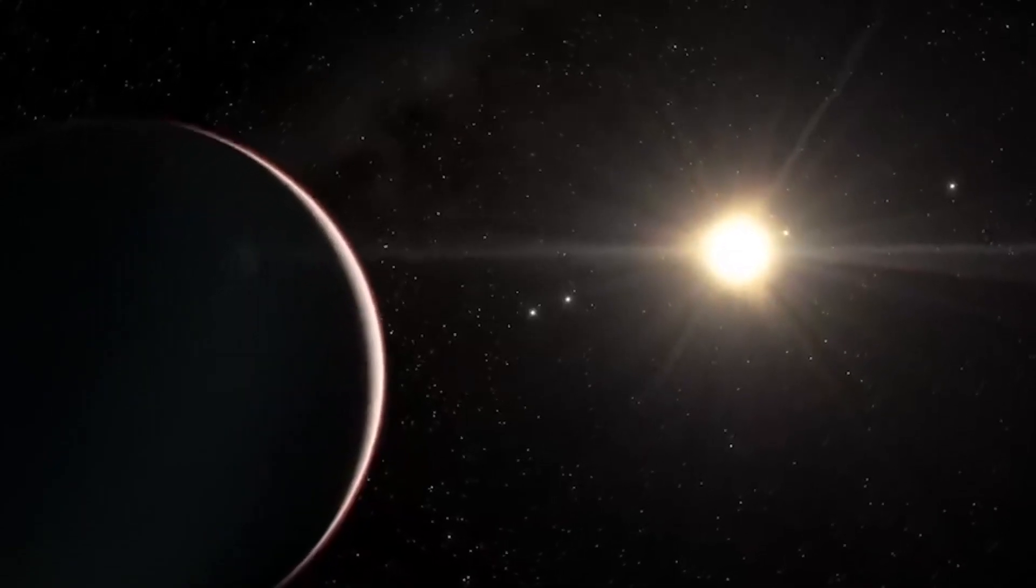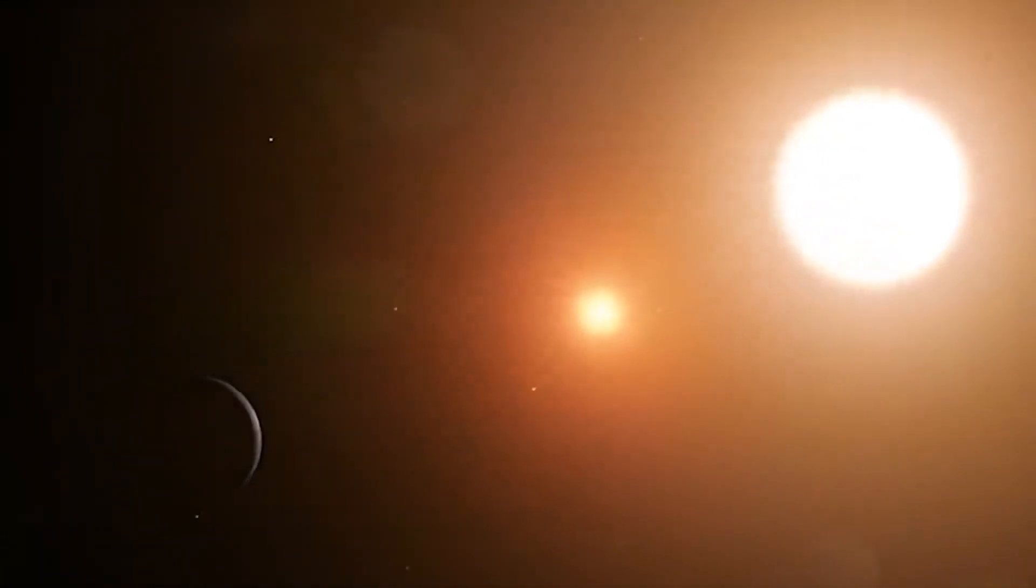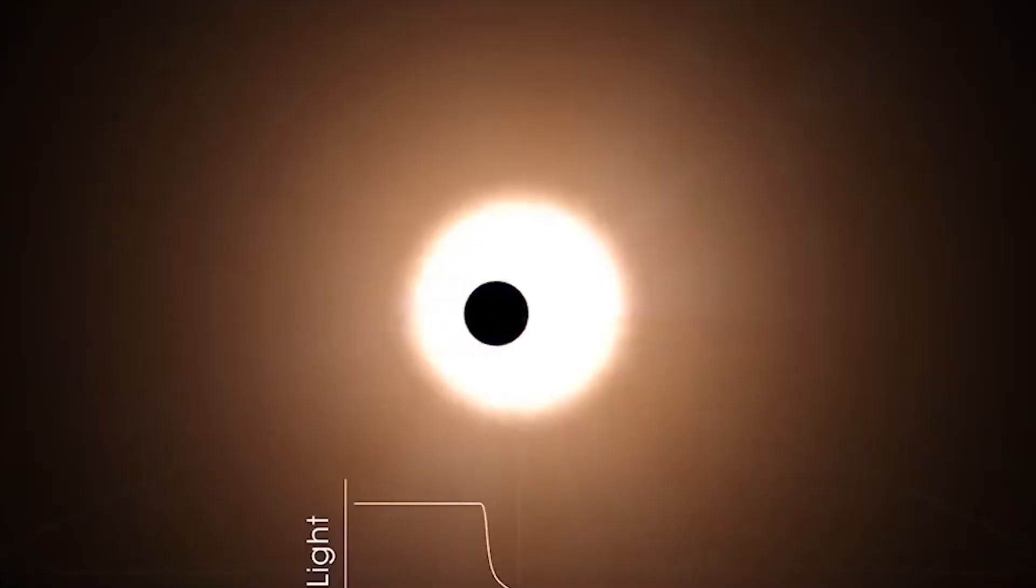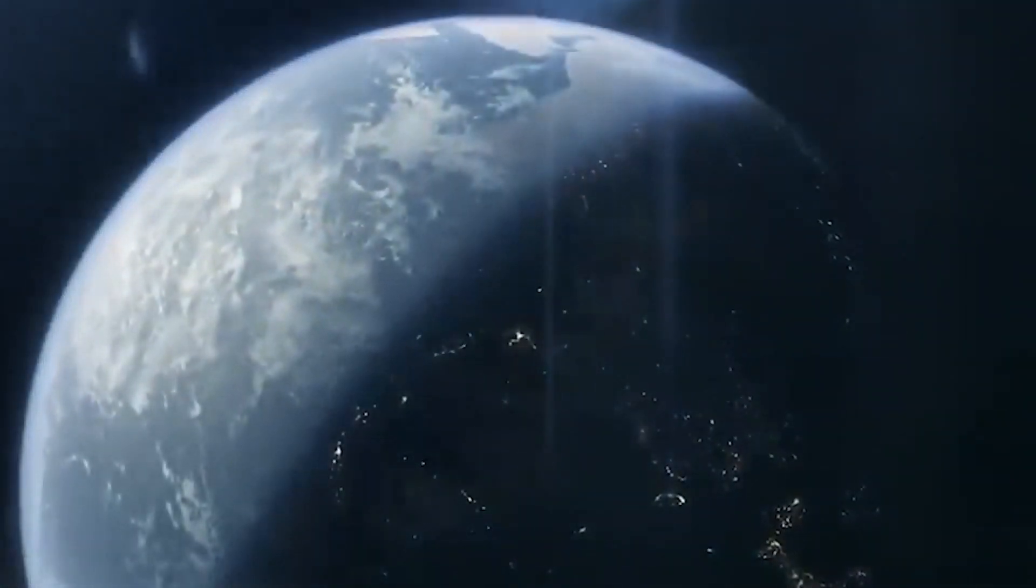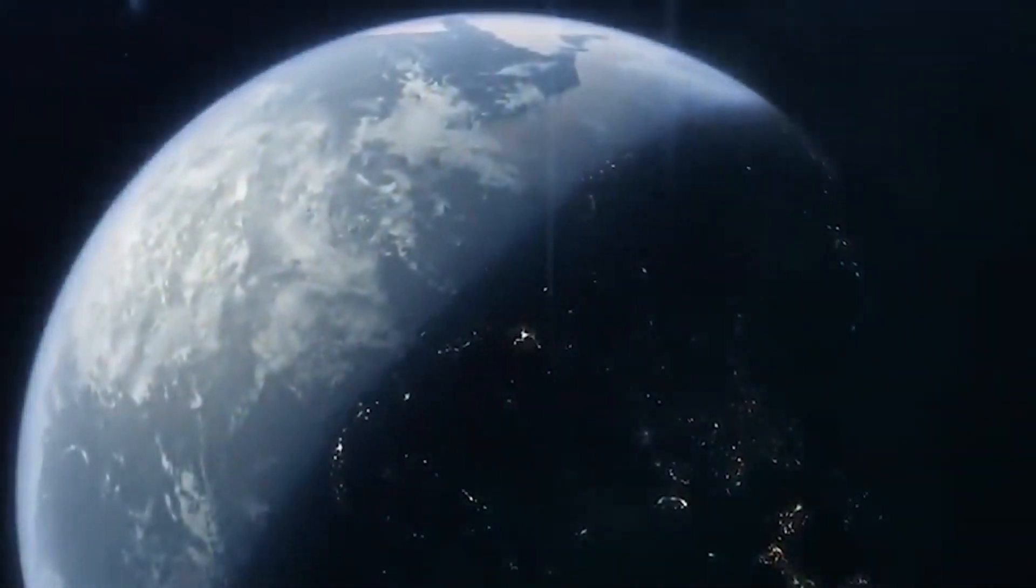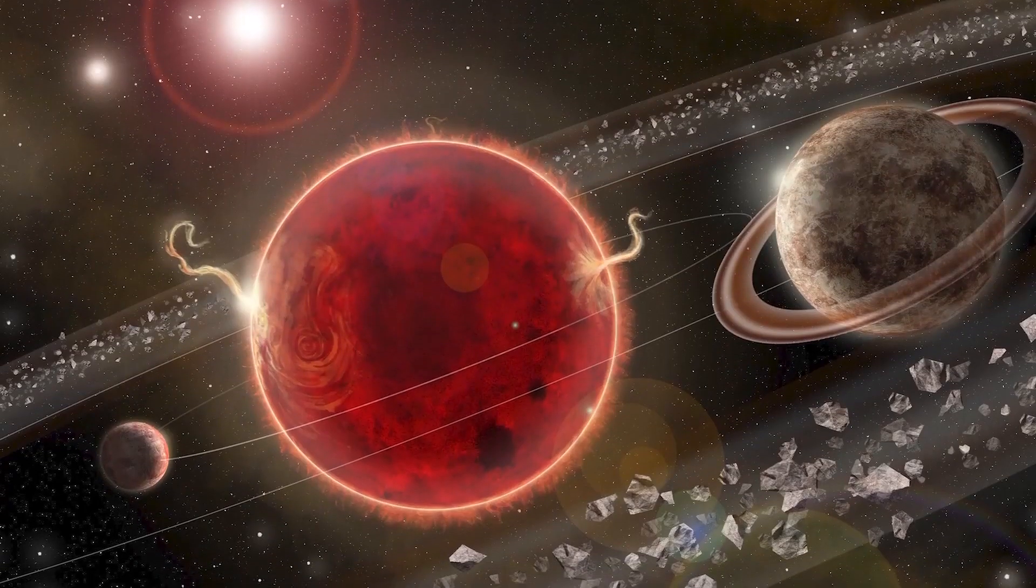Now, it is a known fact that Proxima b is a tidally locked planet on which the part of it facing light has a region that reaches boiling temperature and produces constant hurricanes. It would seem there might be a small part where life may exist if it is possible.